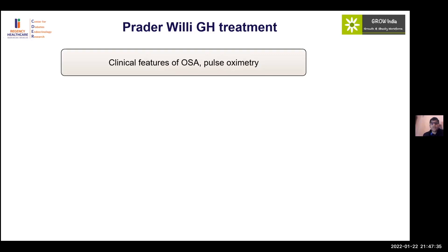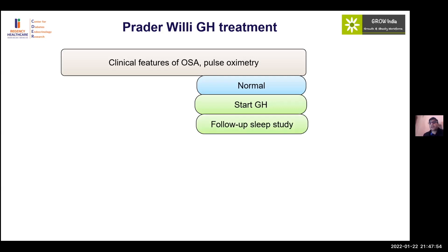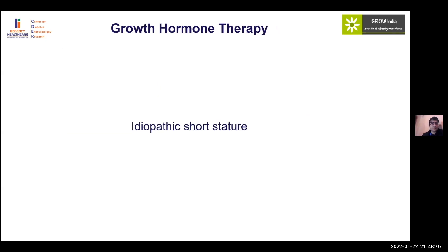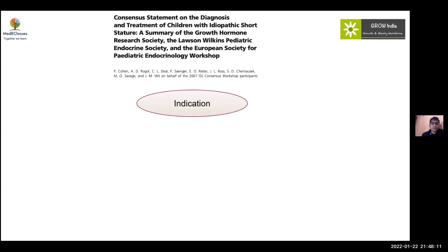Obstructive sleep apnea is especially important in Prader-Willi because worsening of OSA has been seen with growth hormone therapy. Before starting, perform pulse oximetry; if normal, begin growth hormone but follow up with formal sleep study and regularly ask about symptoms like snoring or nighttime awakening. If pulse oximetry is abnormal, perform intervention, repeat sleep study, and only then proceed with growth hormone. In idiopathic short stature, where extensive workup yields no diagnosis, growth hormone has been shown to be helpful.